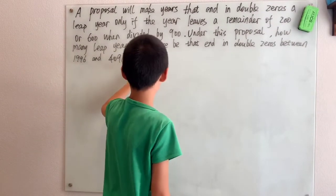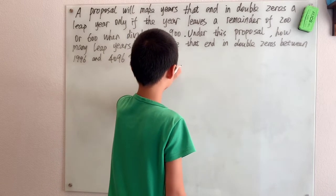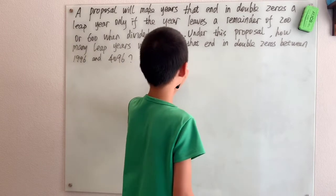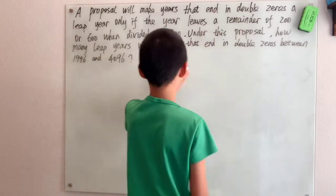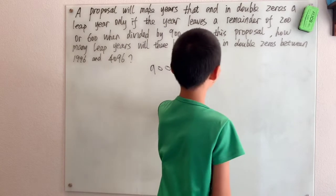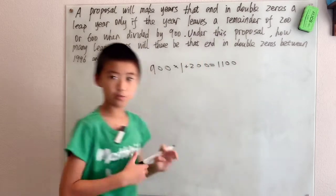For example, say I have a multiple of 900, 900 times 1. Then to get something that has a remainder of 200, I can just add on 200 and then get the number 1100, which has a remainder of 200 when it's divided by 900.